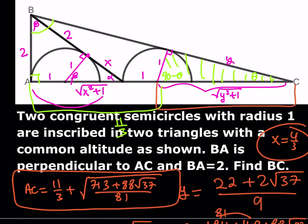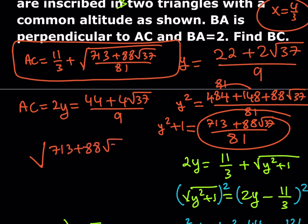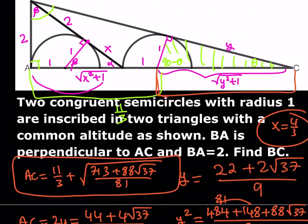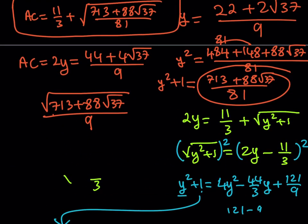BC equals 2 times the square root of y squared plus 1. We already have y squared plus 1 computed: it's (713 plus 88 root 37) over 81. So BC equals 2 times the square root of that divided by 9.